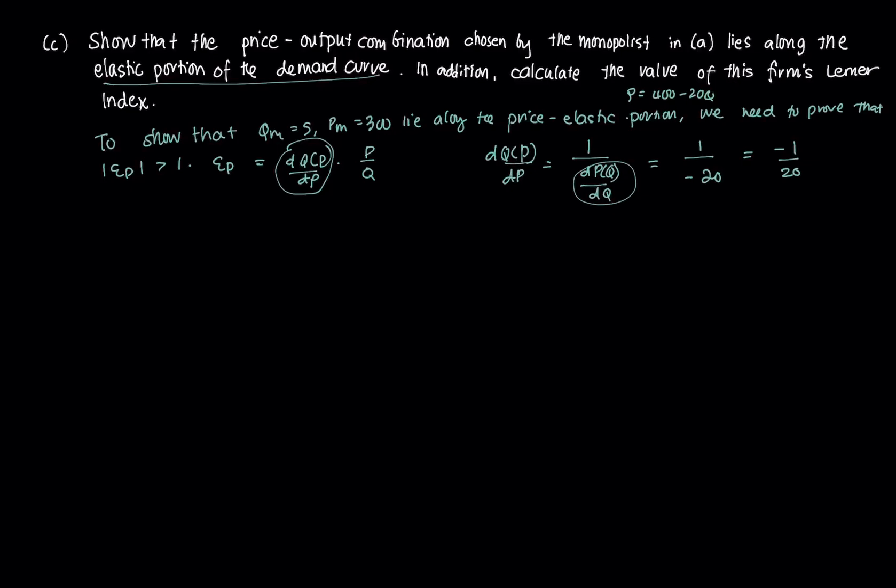Then we just plug it into this formula here. The price elasticity is going to equal negative 1 over 20 times P. P is going to equal 300 all over 5. This is going to be negative 300 over 100 or simply negative 3. If we take the absolute value of negative 3, that's equal to 3, which is greater than 1.